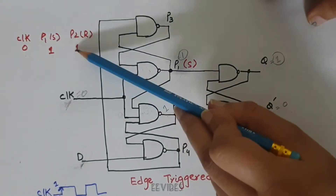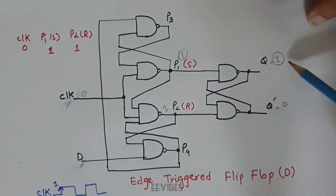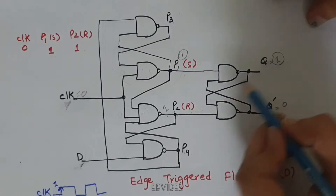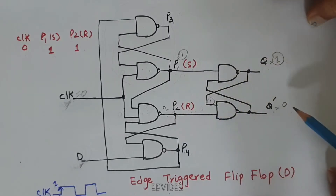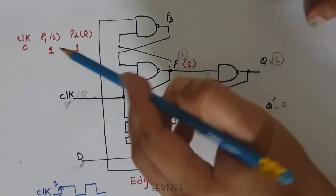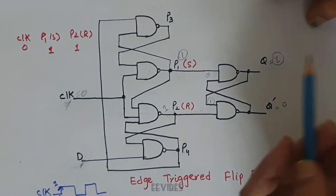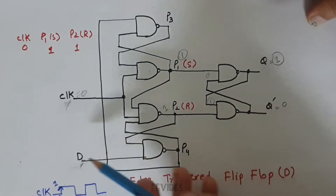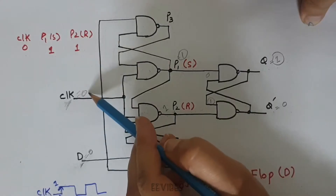When S and R are both equal to 1, if the previously set output Q was equal to 1, then Q-bar is obviously equal to 0. This Q is fed at the input of this NAND gate making 1,1 produce output equal to 0, and then 0,1 produces output equal to 1. The latch or flip-flop remains in the previous state and doesn't change its value no matter what the value of D input is. So if D was equal to 0 when clock was also equal to 0, the output should be transferred — but we will see it doesn't actually change.